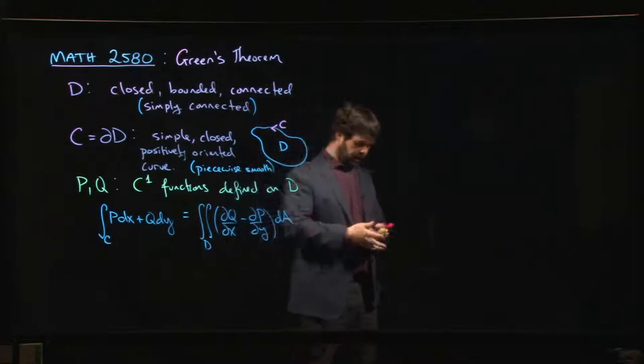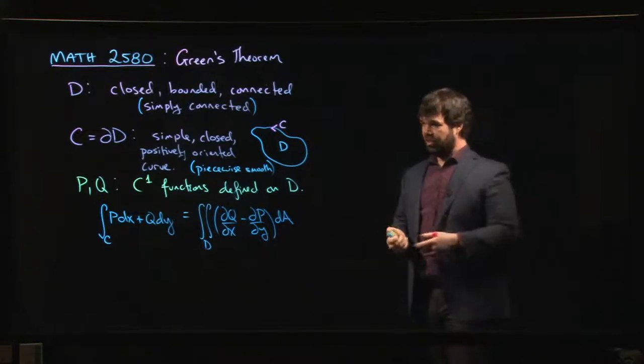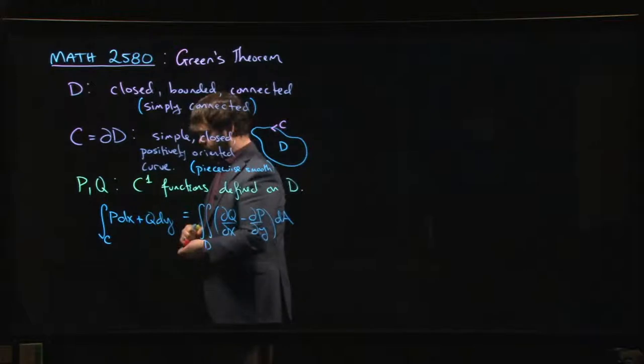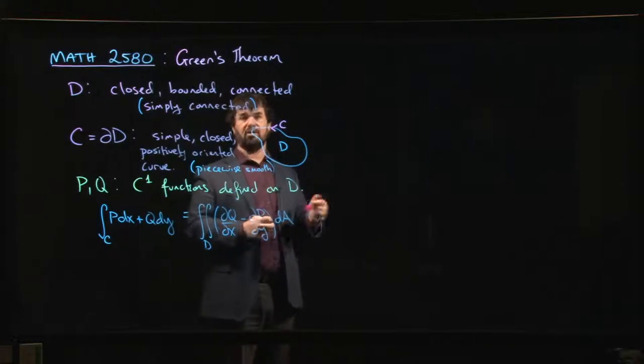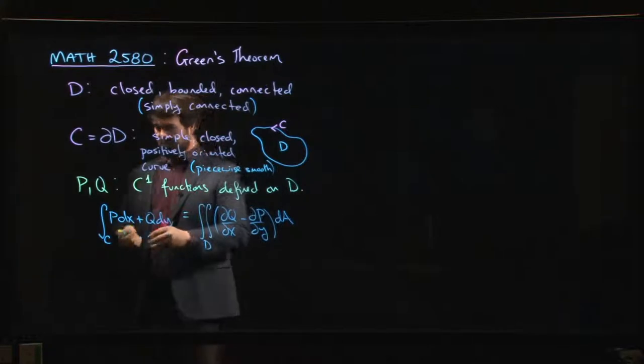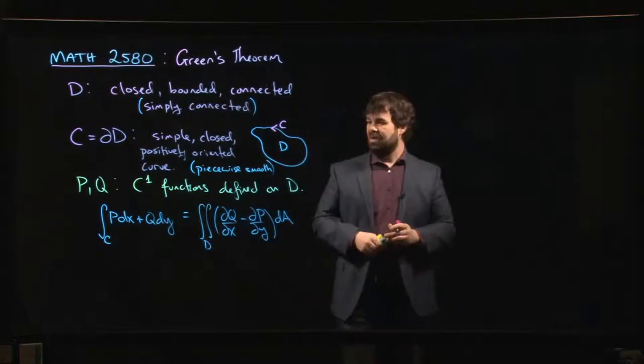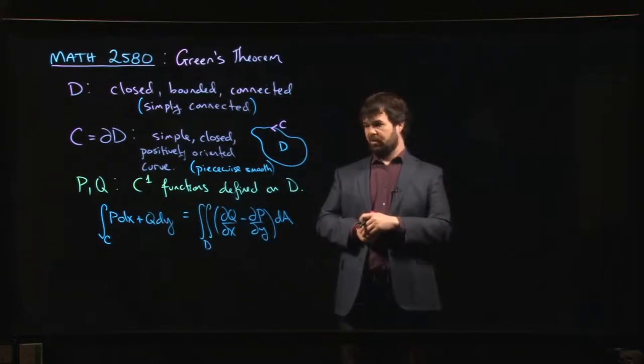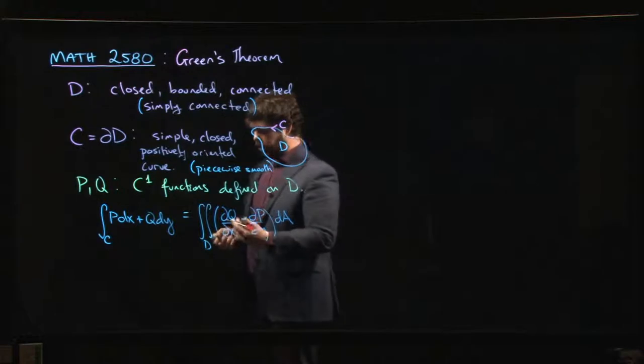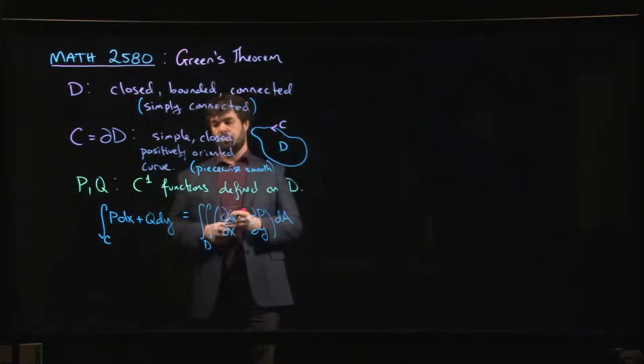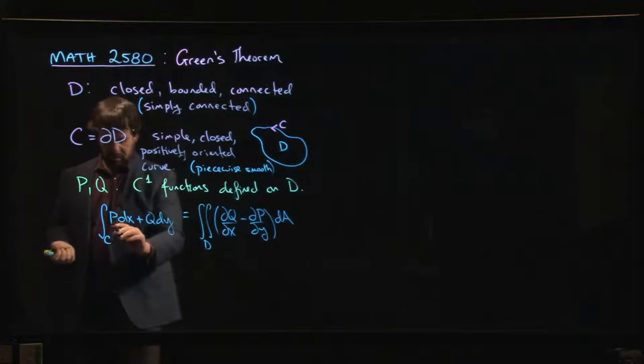The guy Green that this is named after, by the way, was an English amateur mathematician. He didn't do this for a living. From the age of nine, his parents ran a bakery and put him to work. From nine years onwards he was a bakery boy. Whenever he wasn't baking, he went to the library and read math books. He learned as much as he could, managed to prove this theorem, and wrote a little pamphlet on it. They made about a hundred copies. Hardly anyone read it.